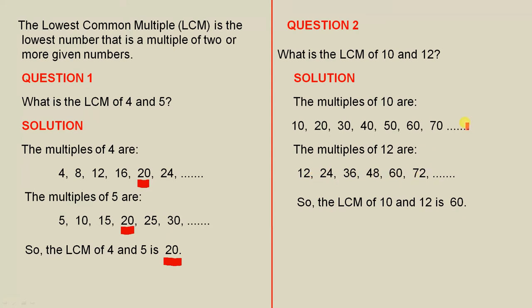We don't have to go all the way — we just do enough so that we get a common number that is the lowest one. So the LCM of 10 and 12 is 60.